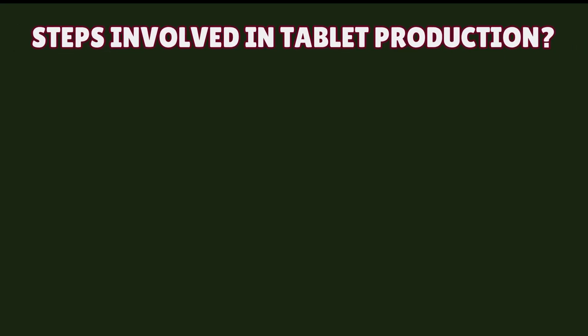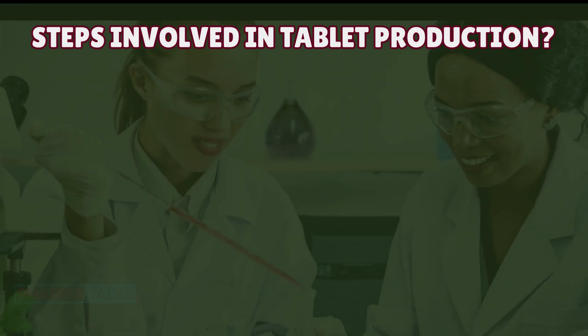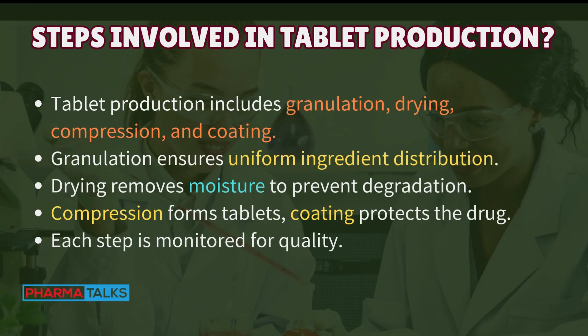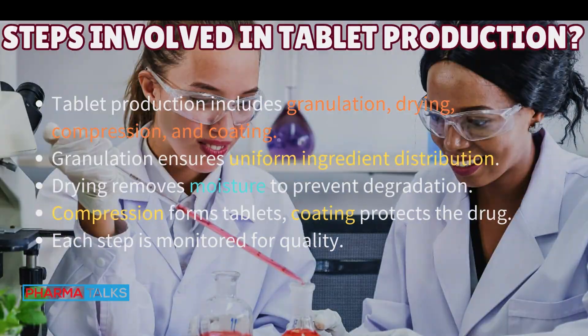Understanding production processes and equipment: Steps involved in tablet production? Tablet production includes granulation, drying, compression, and coating. Granulation ensures uniform ingredient distribution. Drying removes moisture to prevent degradation. Compression forms tablets. Coating protects the drug. Each step is monitored for quality.